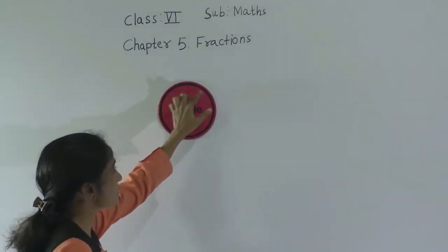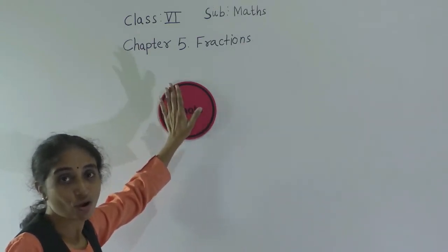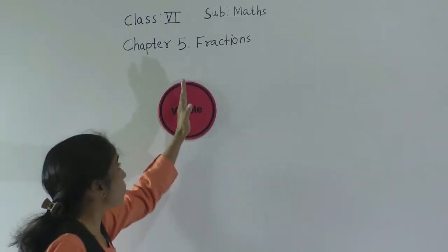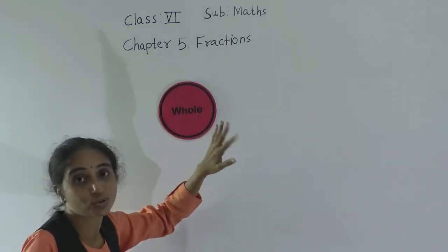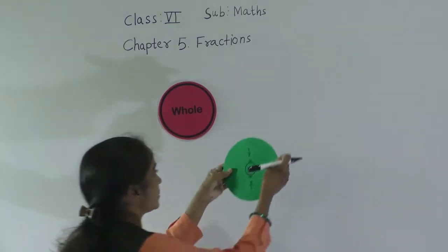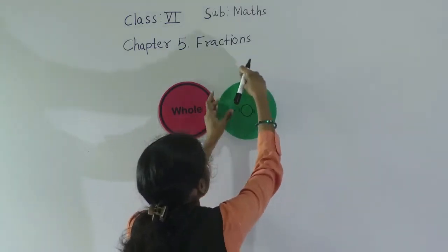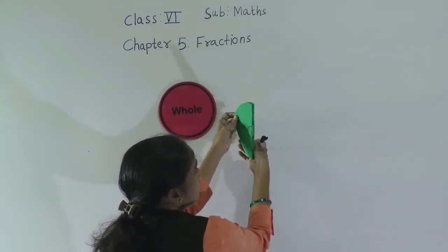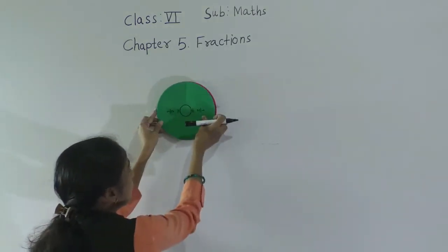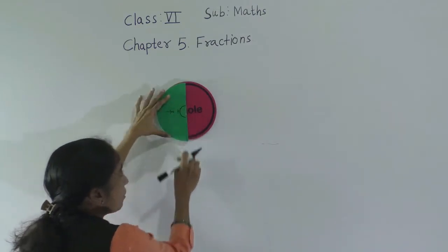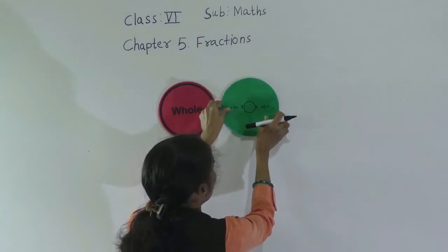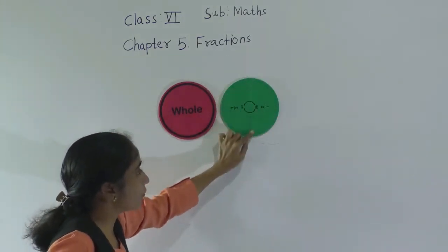See, this is a complete circle. Fraction is a part of whole — this is the whole. Now if we make a part, suppose this whole is divided into two equal parts. That is half. This is half. This is the whole. This part is half — equally divided. This part is half.